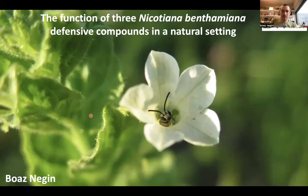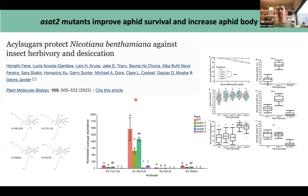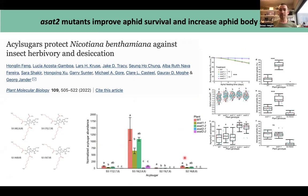As Gaurav said, I'll be presenting today about how three different defensive compounds in Benthamiana affect its defense in a natural setting. This project started in our lab before me with another postdoc, Hong Lin. What he wanted to do is create Benthamiana plants that were susceptible to insects. Benthamiana is very naturally resistant to insects, and if you want to use its molecular tools in insect assays, it's hard to do when it's so resistant.